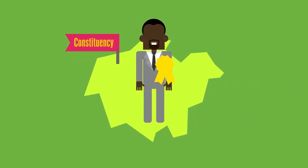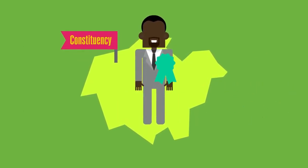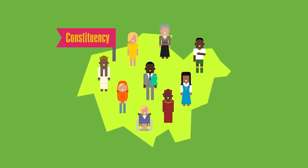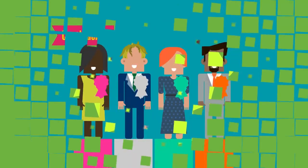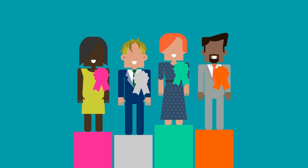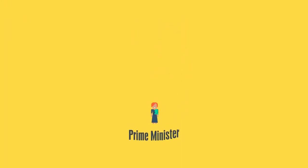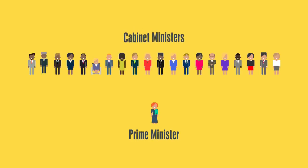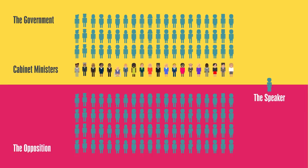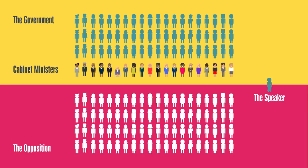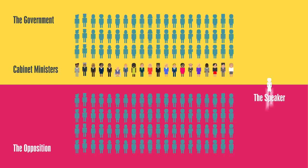They belong to either a political party or are independent, and are elected by constituents of the area they want to represent. The leader of the party that has the most MPs elected after a general election becomes the Prime Minister and heads up the government. They choose a cabinet made up of 20 senior ministers, who coordinate each government department's work. Parties not in power are called the opposition. MPs from the opposition and government question the government on policy and proposed laws. The Speaker keeps the House in order by chairing these debates.